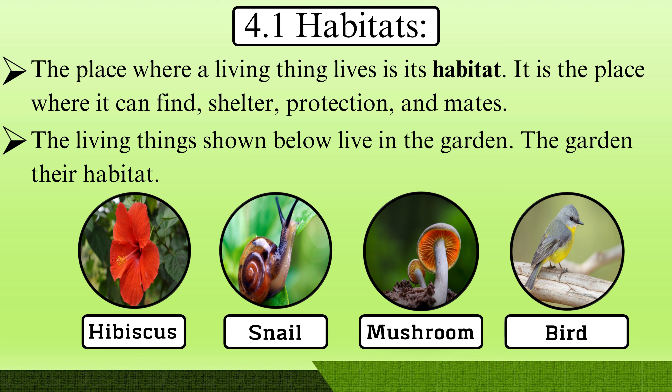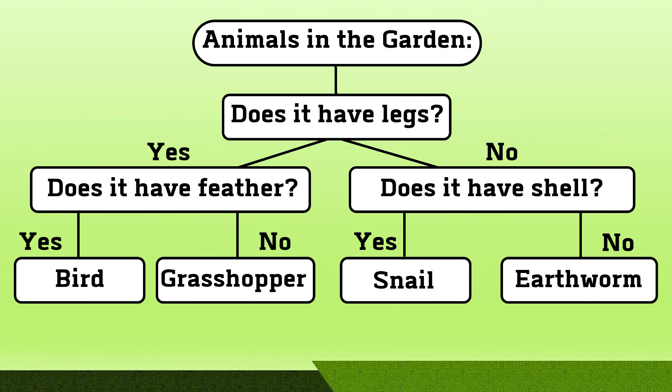Examples of living things in the garden include hibiscus, snail, mushroom, and bird. We can classify animals in the garden using a divergent key. Does it have legs? Yes — does it have feathers? Yes: then it is a bird. No: then it is a grasshopper. No legs — does it have a shell? No: then it is an earthworm. Yes: then it is a snail. This is a divergent key.